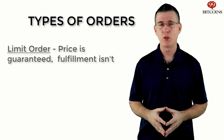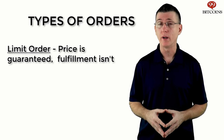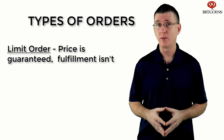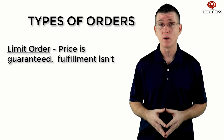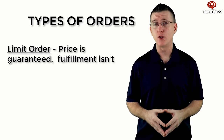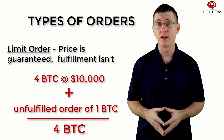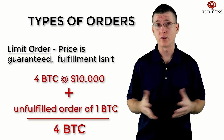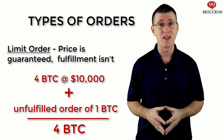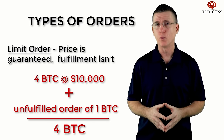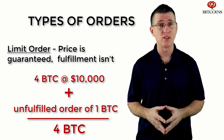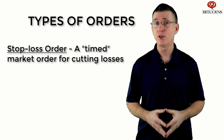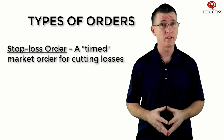Meanwhile, with a limit order, you will only buy or sell Bitcoin at a specific price that you decide on. In other words, the order may not be entirely fulfilled since there won't be enough buyers or sellers to meet your requirements. Let's say you place a limit order to buy 5 Bitcoins at $10,000 per coin — you could end up only owning 4 Bitcoins because there were no other sellers willing to sell you the final Bitcoin at $10,000. The remaining order for 1 Bitcoin will stay there until the price hits $10,000 again and the order will be fulfilled.